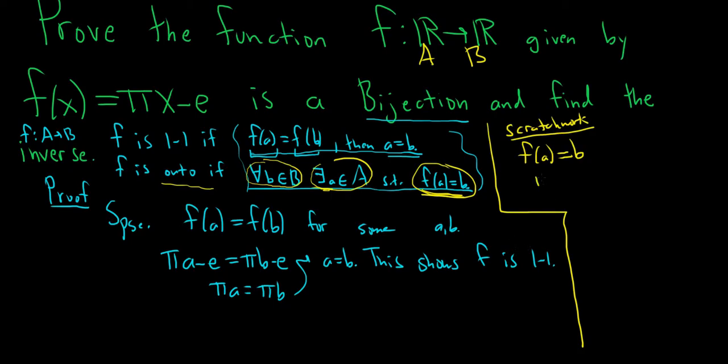f(a) is πa - e, and that's equal to b. And we want to find little a. We need to show there exists an a. So we'll add e to both sides. That gives us πa = b + e. Then we can divide by π. So a = (b + e)/π. That's certainly a real number.